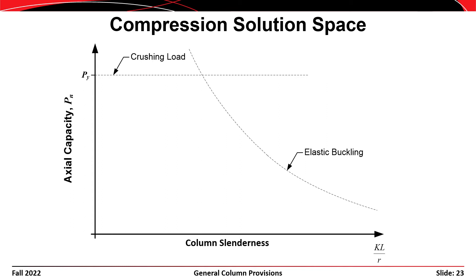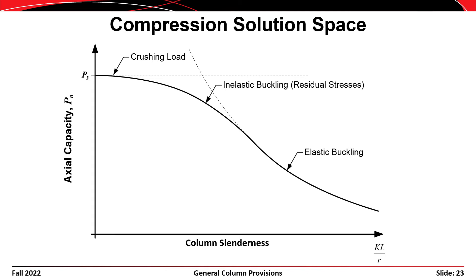In reality, limit states are more conservative. Considering residual stresses, shorter stockier columns exhibit inelastic buckling and cannot reach the upper crushing load peak, producing a more rounded failure curve. The crushing load is only reached theoretically for a column of zero length. The transition between inelastic and elastic buckling occurs at 4.71 times the square root of E over F sub y, as seen in the design equations.